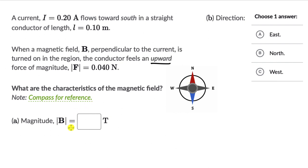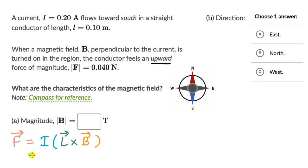Let's focus on the magnitude. The force on a current-carrying wire in a magnetic field is given by the vector F = IL × B. For the magnitude, that is F = ILB sinθ. We can take the length vector in the direction of the current, so if the magnetic field is perpendicular to the current, it's also perpendicular to the length vector. That means θ = 90°, and sinθ = 1.